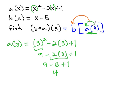4 then is the answer from a(3). 4 is what gets plugged into the b function, as we find b now of 4, plugging 4 in for x in the other equation. 4 - 5 is -1. We get a completely different solution when the composition order is switched.